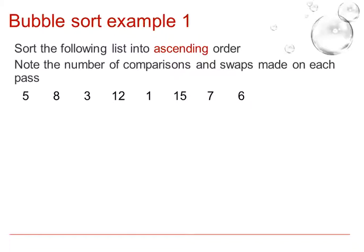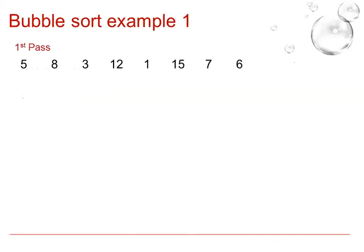Let's look at bubble sort example 1. Here we ask to sort the following list into ascending order and we will need to note the number of comparisons and swaps made on each pass. Let's write a note for the comparison of swaps as we go.